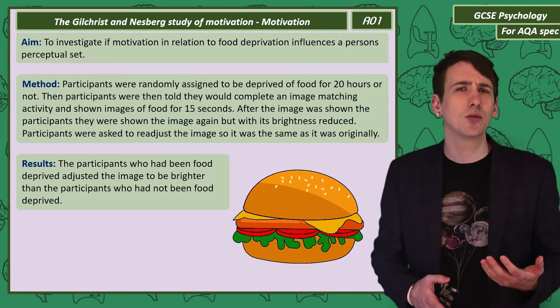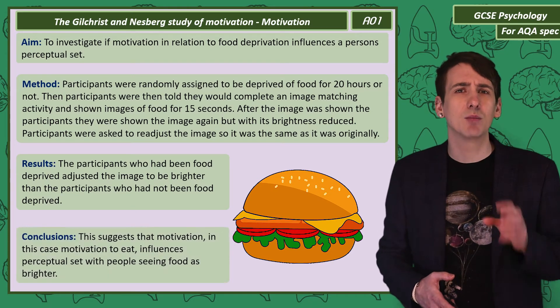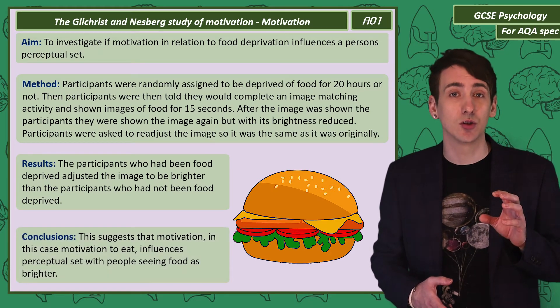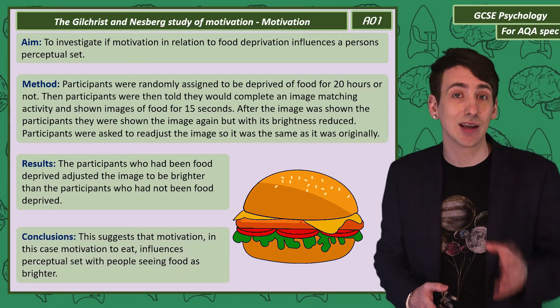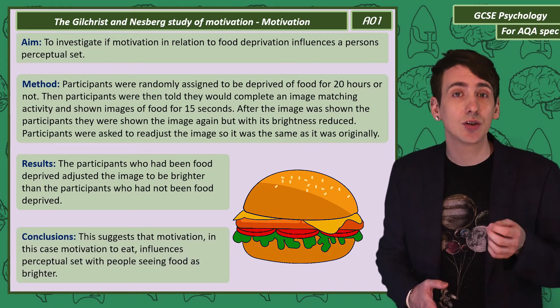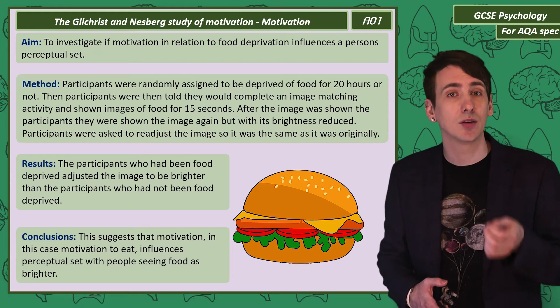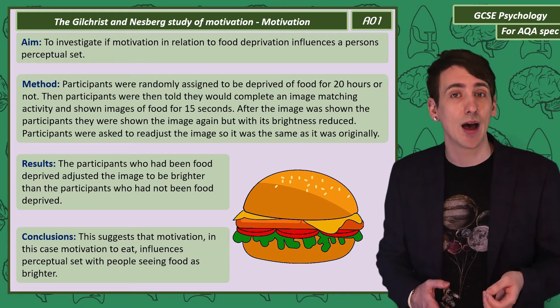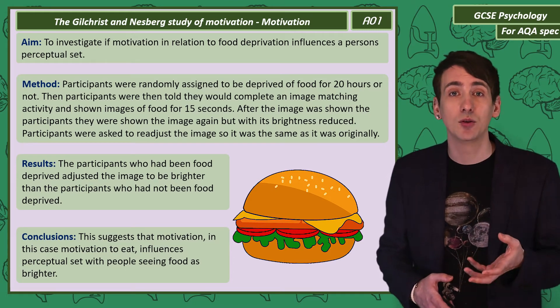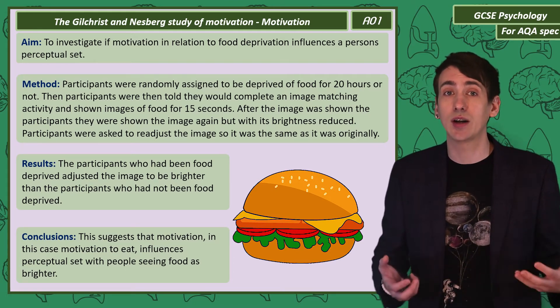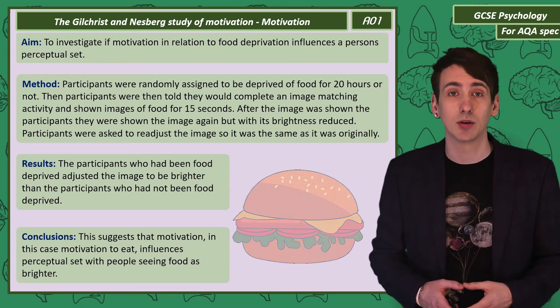Gilchrist and Nesberg found that the food-deprived participants adjusted the image to be brighter than the participants who had not been food deprived. They concluded that motivation — such as the motivation to eat — does change a person's perceptual set, making food appear brighter to hungry people.